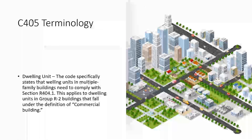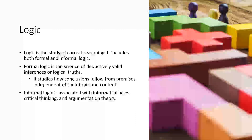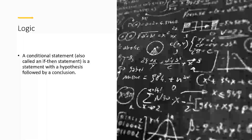Another term is dwelling units, which references the residential energy portion. I'll go over what happens when you have a multifamily building that is technically commercial but has dwelling units with an R2 categorization — there is one caveat you have to address. For understanding code, it's written in a logic-based format. There are four intents and purposes, but we'll go over two: formal logic — deductively valid inferences, basically 'do A then B happens' — and informal logic, which is critical thinking or your best judgment in context. I like to think of it as an if-then hypothesis: if I have this LPD, then I'm compliant; if not, I need to reduce by X watts per square foot.